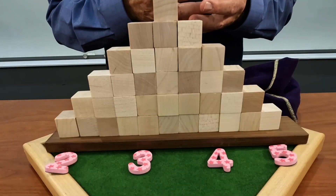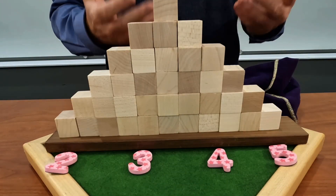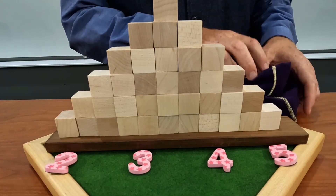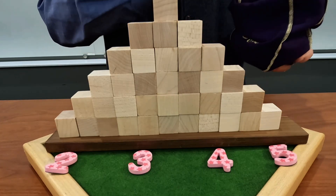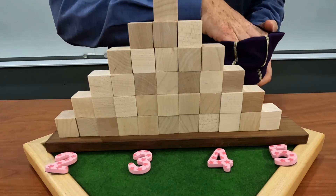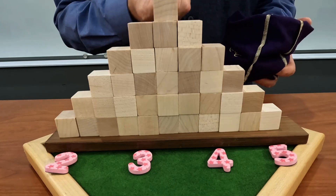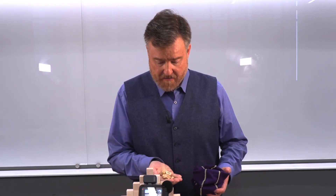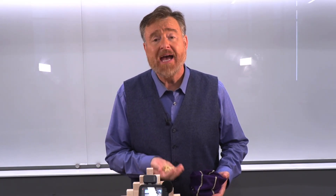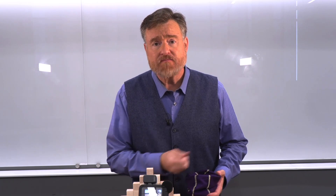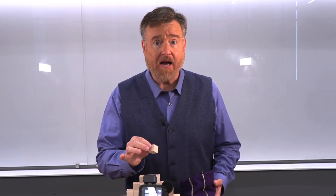Here I have a distribution of sample means. This distribution was created by sampling an infinite population. I would choose samples of size 30, add up those individual scores, and get a mean. That mean was represented by one of these blocks.